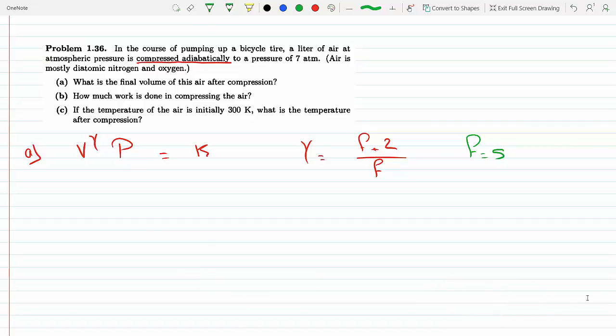That tells me that V1, which makes gamma to be 7 over 5, so V1 raised to the 7/5 times P1 has to equal V2 raised to the 7/5 times P2. We're told that we have a liter of air, so this is V1 at atmospheric pressure, this is P1, to a pressure of 7 atm, this is P2, and we are looking for V2.